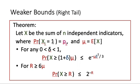We have another case: when the value that X is compared to is super large — specifically, if R is larger than or equal to 6 times mu — then the bound you can use is 2 to the power minus R.